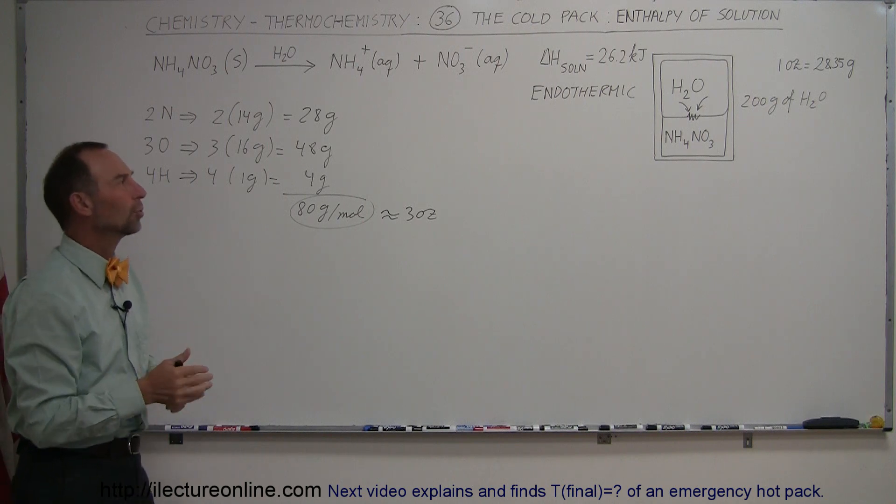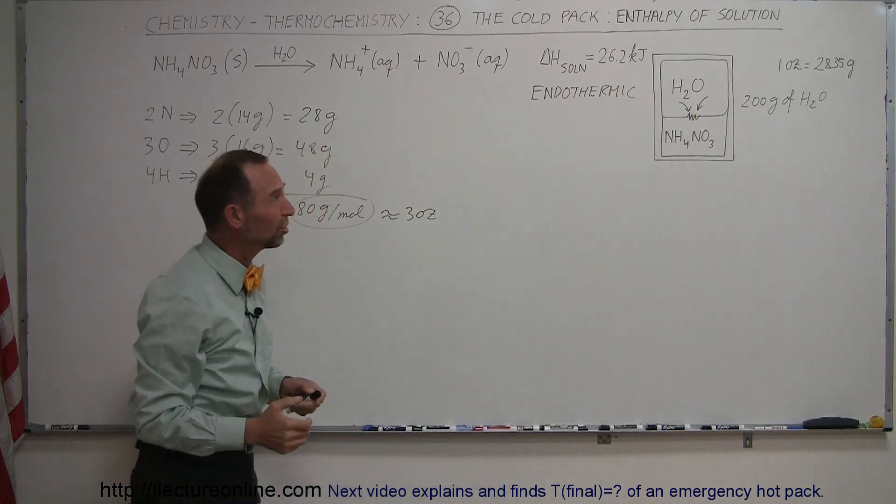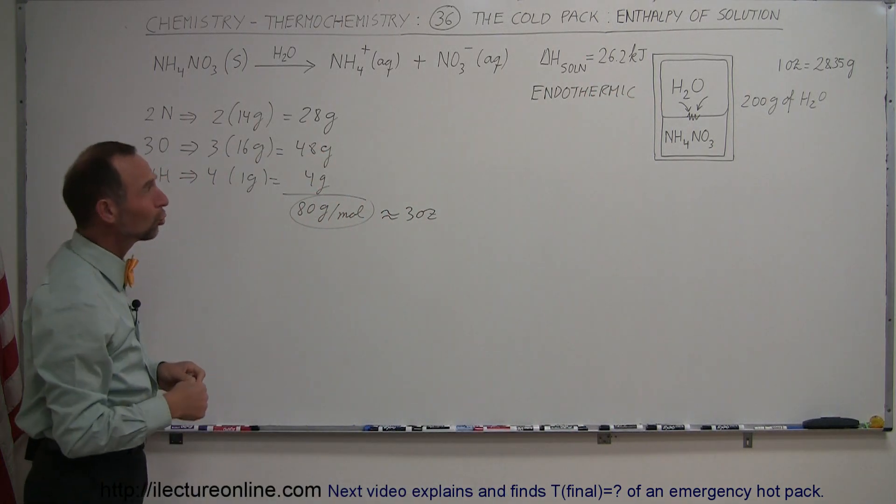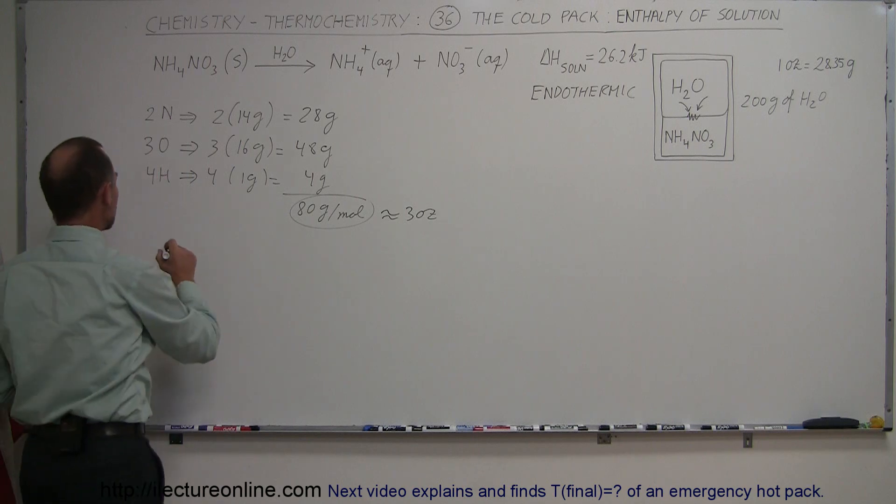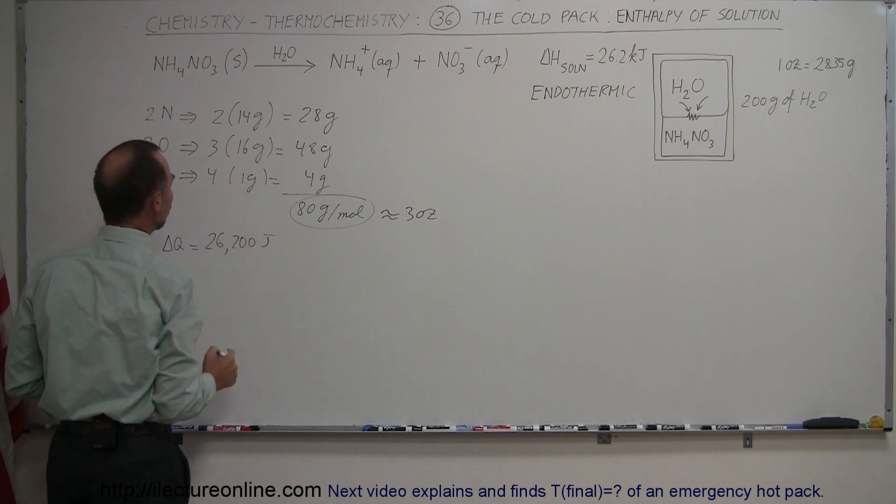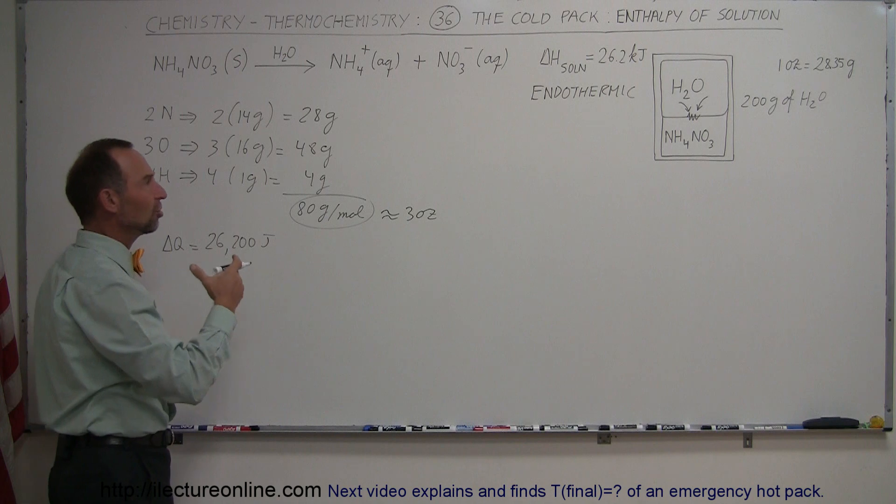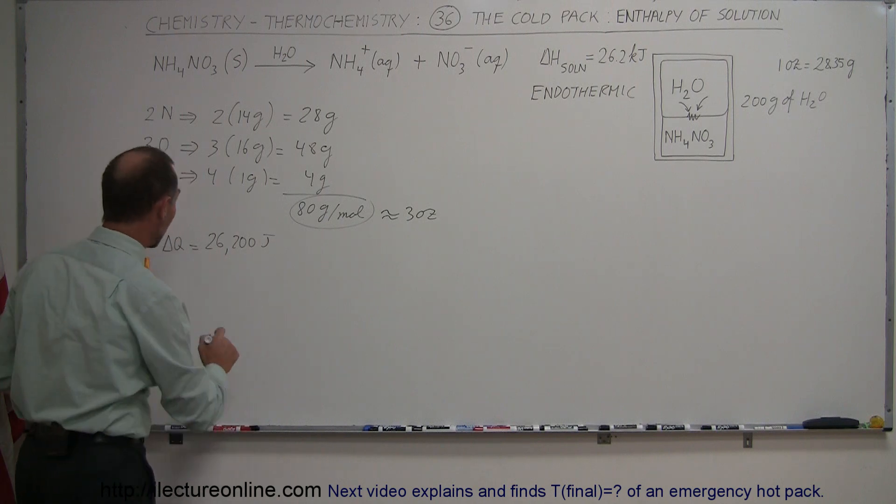You squeeze it, water rushes in there, it dissolves the ammonium nitrate. How much heat is released? Well, in this reaction we release 26.2 kilojoules, which is 26,200 joules. So the delta Q is equal to 26,200 joules.